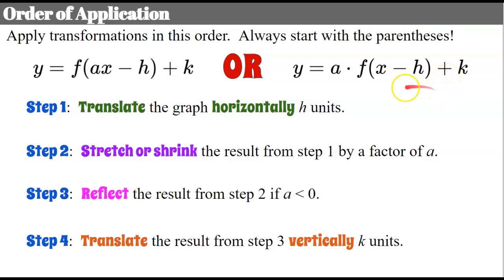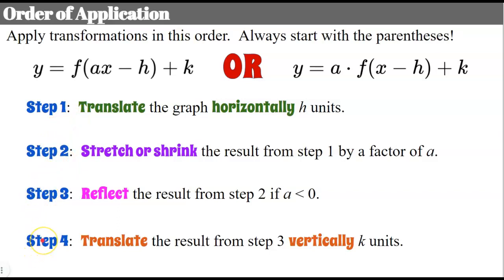I hope you'll pause the video here and write down these four steps. We translate horizontally, stretch or shrink, reflect, and translate vertically. Just to note — they're not all necessary. Sometimes you'll do steps one and three, or two and three, or two and four, or you might do all four of them. But this is the order in which you would look to apply them.